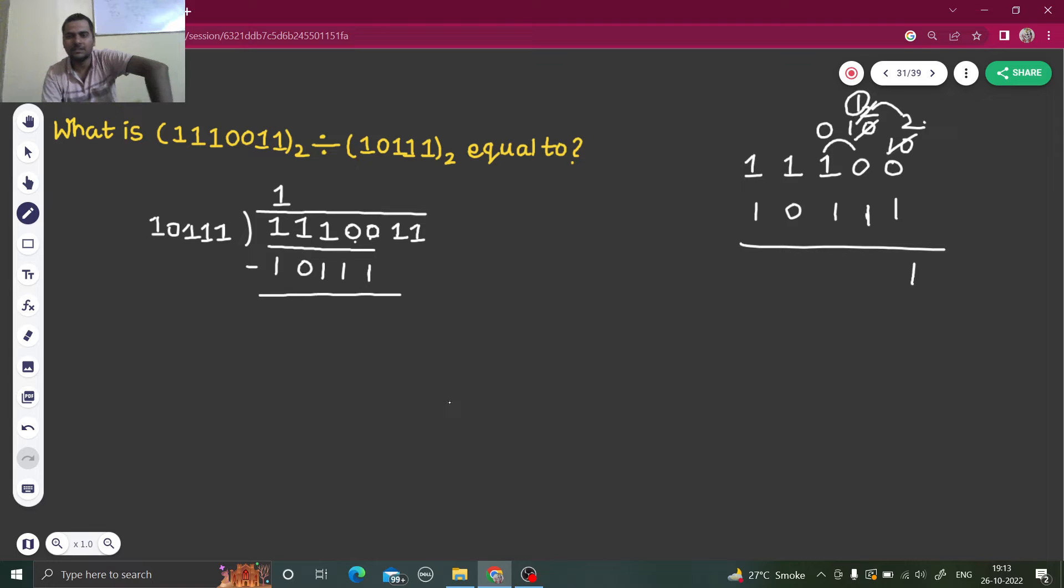This is finally one. One minus one is zero. This is again zero minus one. So I will take borrow. So this becomes one zero, which is two. Two minus one is one. Again, this became zero. So this will borrow. So this became zero. This became two. Two, which is one zero. So two minus, do I need it? Sorry, I didn't need to borrow because this is simple. Zero minus zero is zero only. And one minus one is again zero. Fine.